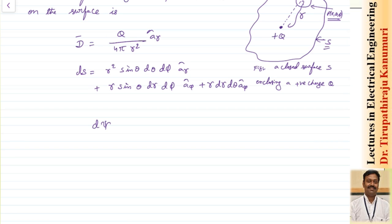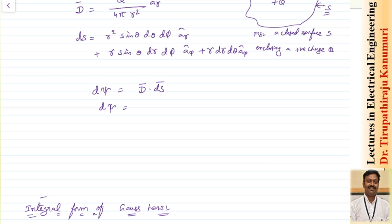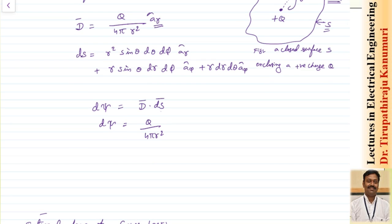The flux leaving a small differential surface is dψ equals D dot dS, where we take the component of D normal to the surface. Since D is in the direction of a_r, when we take the dot product with the differential surface, only the a_r component survives — the other two components become zero. So dψ equals Q divided by 4πr² times r² sinθ dθ dφ.